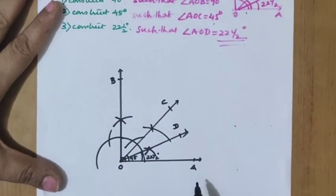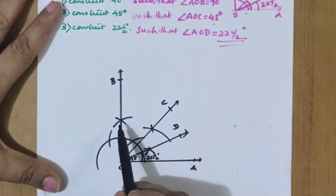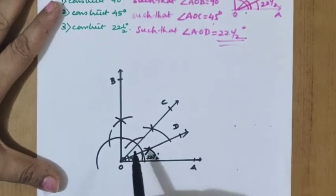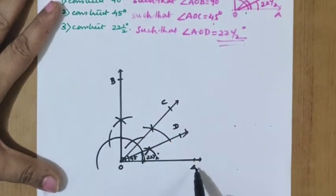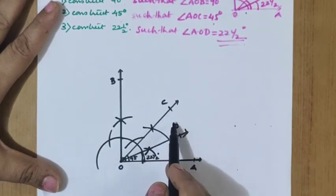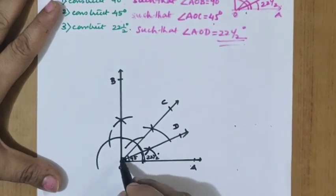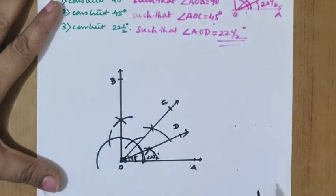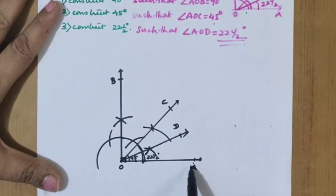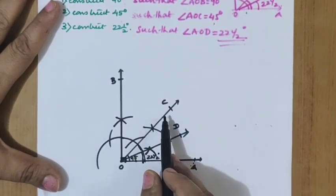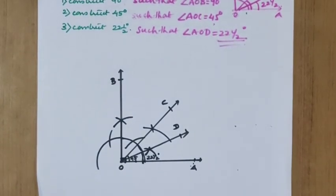To draw angle AOB equal to 90°: draw a semicircle, then make two equal cuttings with the same radius and draw two more arcs through those points — you get angle AOB equal to 90°. Then bisect AOB: place the compass on the arc and take more than half, perform the bisection to get angle AOC equal to 45°. Then bisect AOC again to get angle AOD equal to 22.5°. Mark and label all three angles — 90°, 45°, and 22.5° — in the final construction.